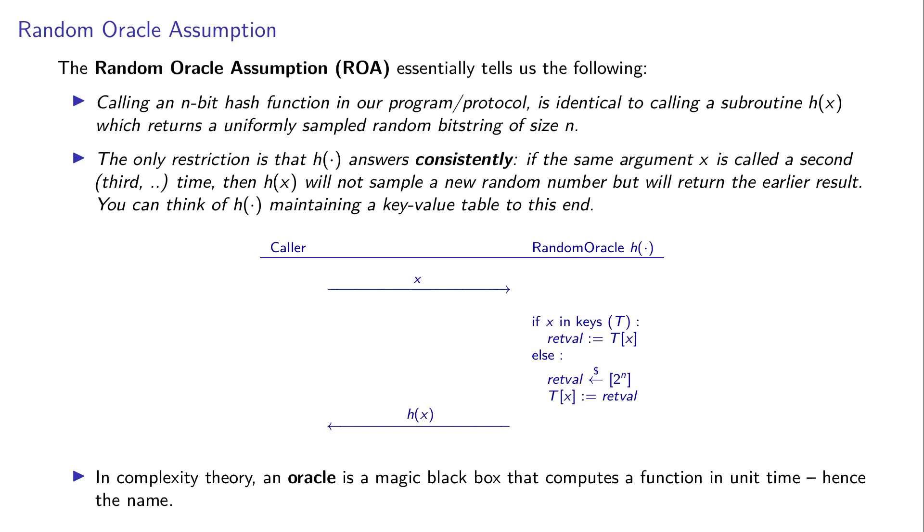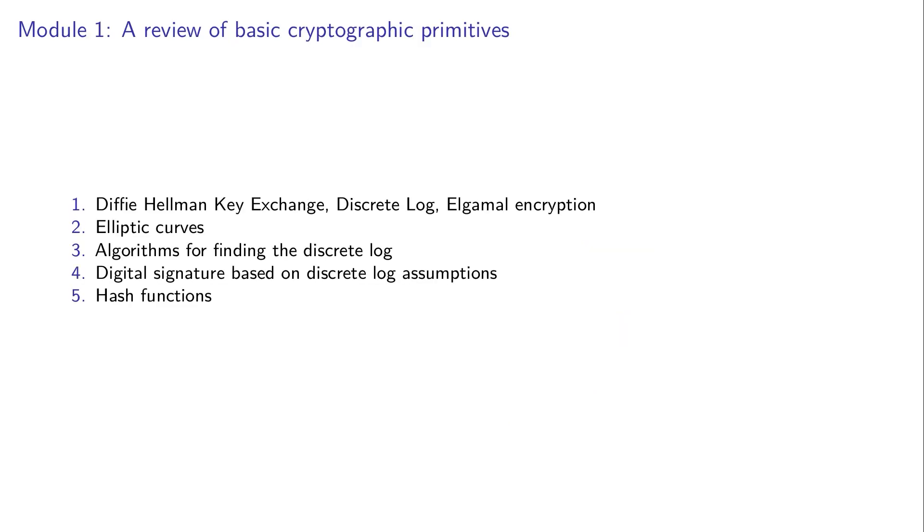We have been through this topic: Diffie-Hellman key exchange, discrete log, ElGamal. I talked quickly about elliptic curves, the algorithm for finding discrete log including the Pollard's rho algorithm, digital signatures based on this assumption, and hash functions.